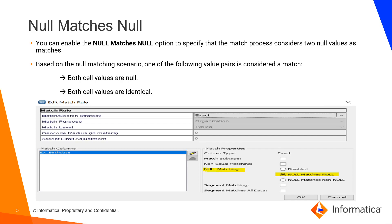Let's discuss about null match null. You can enable the null match null option to specify that the match process considers two null values as matches. Based on the null matching scenario, one of the following value pairs is considered a match: when both cell values are null, and when both values are identical.